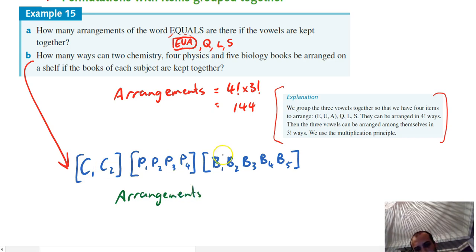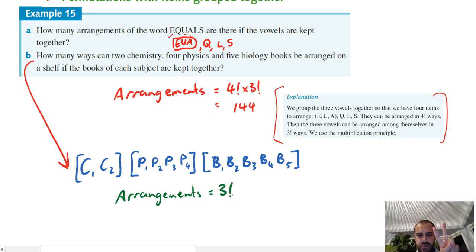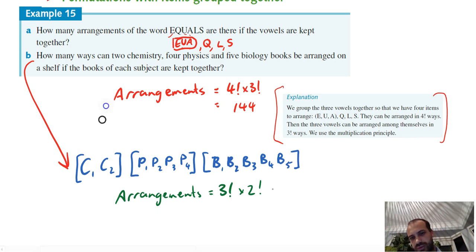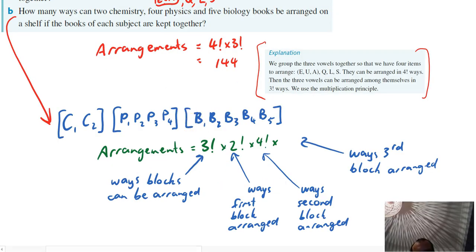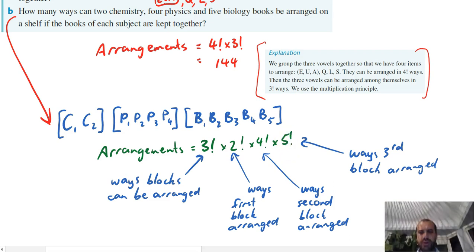So the ways to do these three blocks: 3 factorial. But then we could put the chemistry books this way or that way, right? So the arrangements of two objects is 2 factorial, which is just 2. The physics textbooks can be arranged in a lot of different ways - 4 factorial ways. And finally, the biology textbooks can be arranged in 5 factorial ways. Alright, so I've just made some notes here for you while I was doing that. So the ways that these three blocks can be arranged is 3 factorial, the ways that the first block can be arranged is 2 factorial, the ways the second block can be arranged is 4 factorial, and the ways that the third block can be arranged is 5 factorial.